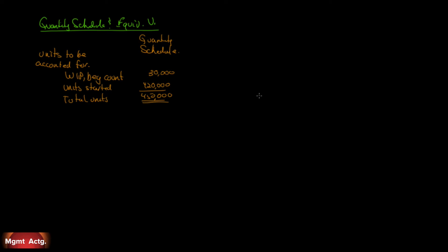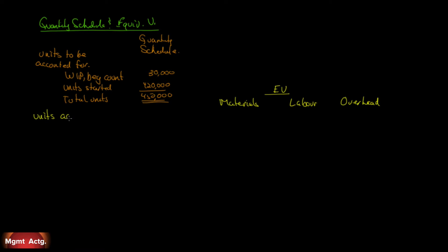For equivalent units, we have to track them by cost — remember that we track by cost. We're given cost breakdowns in terms of materials, labor, and overhead. So we need to itemize the units left in terms of equivalent units: in terms of materials, in terms of labor, and in terms of overhead. The first thing we have to account for is 450,000 units. So let's talk about units accounted for as follows.